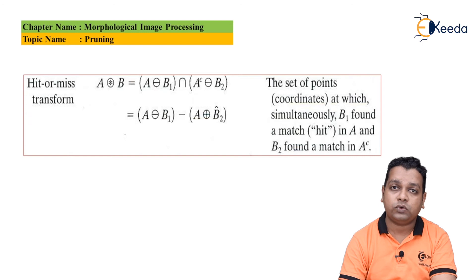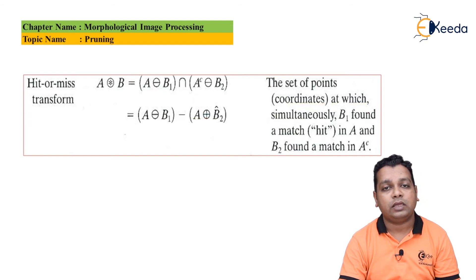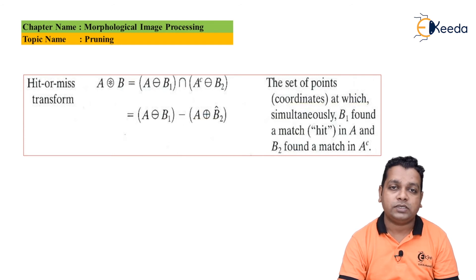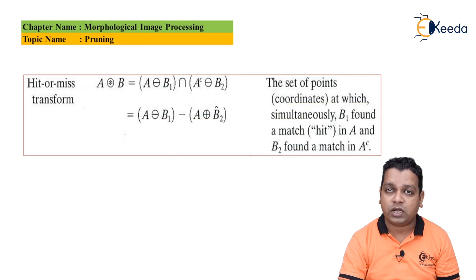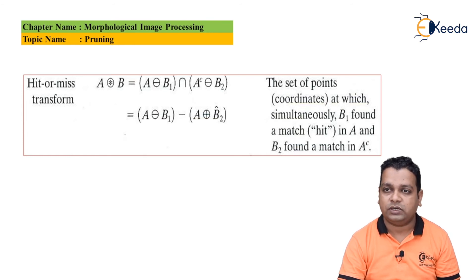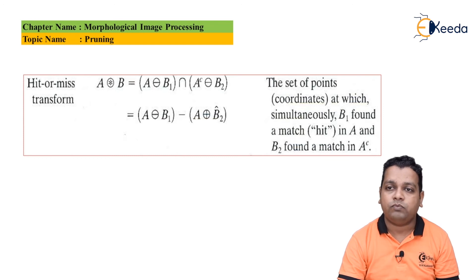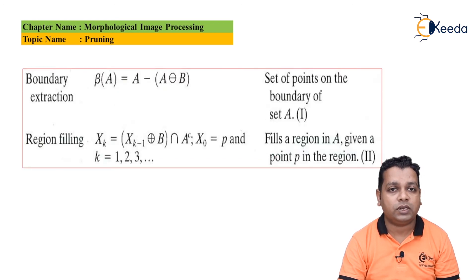The hit-or-miss transformation is also very important. It is represented as an asterisk inside a circle between capital A and capital B. Capital B is the structuring element, computed as the intersection of A eroded by B1 and A-complement eroded by B2, which can also be expressed as the difference of A eroded by B1 minus A dilated by B2-cap. This finds the set of coordinates where B1 found a match in A and B2 found a match in A-complement. Next, boundary extraction finds the set of points on the boundary of set A.